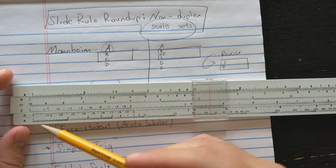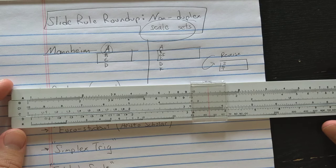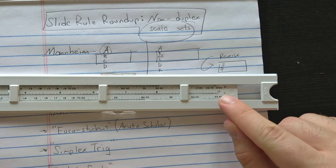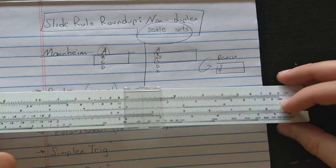It also adds a K scale. Most also have trigonometry on the reverse side and the L scale. So you have the S scale, the log scale and the T scale on the back so you can do trigonometry.